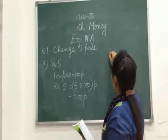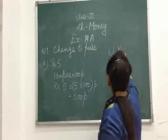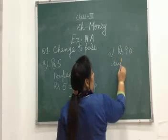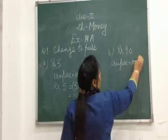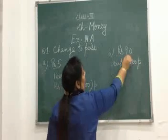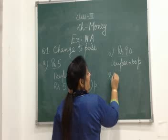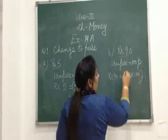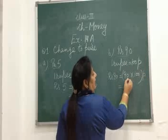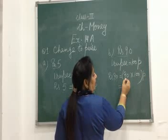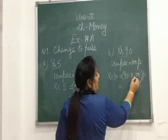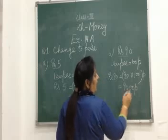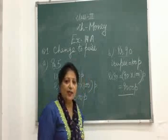Now one more example. Suppose rupees 90. First step: one rupee is equal to hundred paisa. Now rupees 90 will be equal to 90 multiplied by hundred paisa. So 90 multiplied by hundred means 90 and two zeroes — this will be nine thousand paisa.